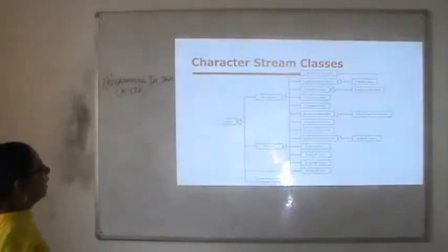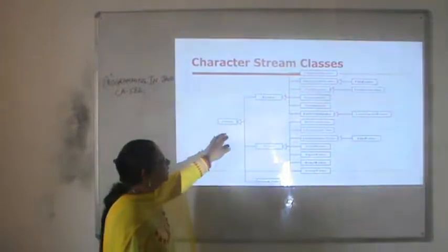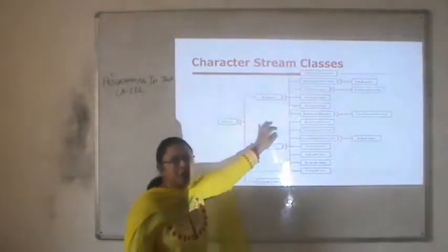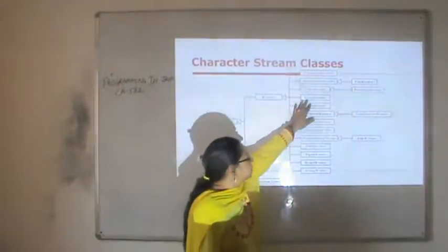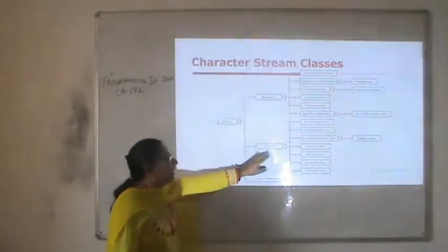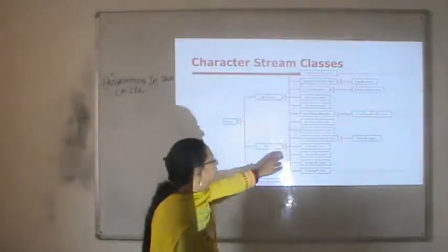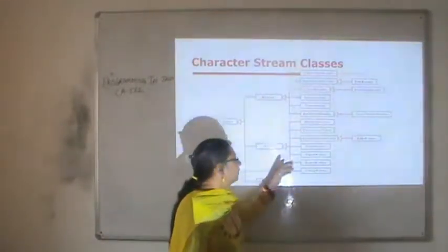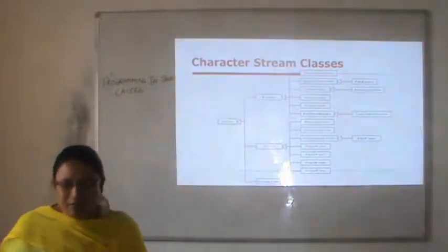This is the hierarchy of character stream classes. The Object class is the super class of all these classes. Reader is the subclass of Object class and is used for reading the data — the subclasses of Reader inherit the Reader class and indirectly inherit the Object class. The Writer class is used for displaying character data, and its subclasses inherit the properties of Writer and indirectly the properties of Object class.